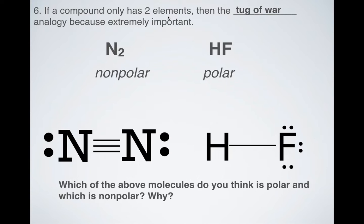HF would not be non-polar — it would be polar because you have fluorine with all of these electrons around it, making fluorine electronegative. Fluorine is better at attracting electrons to itself, whereas hydrogen has less. So HF is a polar molecule. N2 is evenly matched, but F has more pull on the electrons than H, so you'd have a total polarity to the HF molecule.